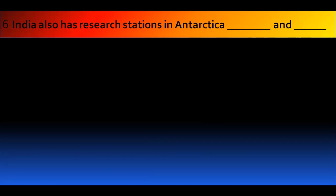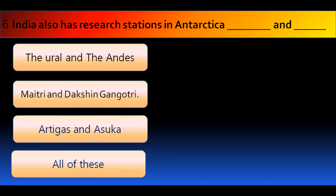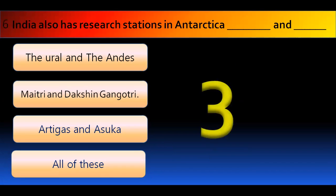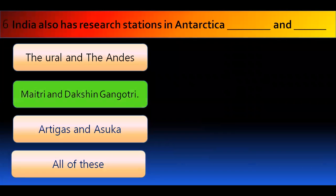Question number 6. India also has research stations in Antarctica, because Antarctica is such a continent where the climate is not suitable for the rest of the countries. So this is why there is a research station in all the countries, and in India there are research stations with their names. The options are Ural and Vendies, Maitri and Dakshin Gangotri, Artigas and Ashoka, or all of these. And the right answer is Maitri and Dakshin Gangotri.